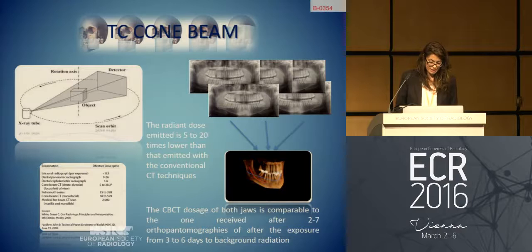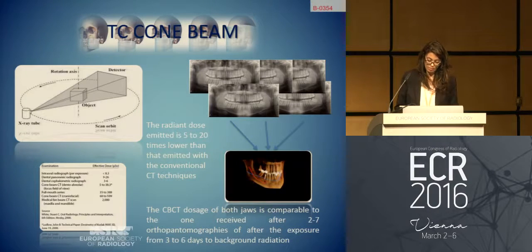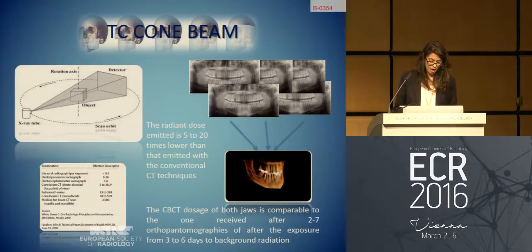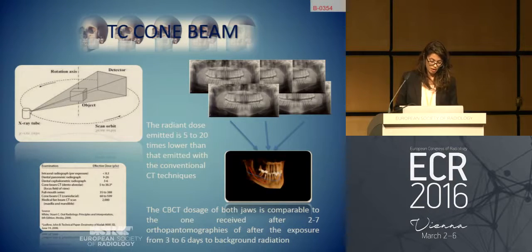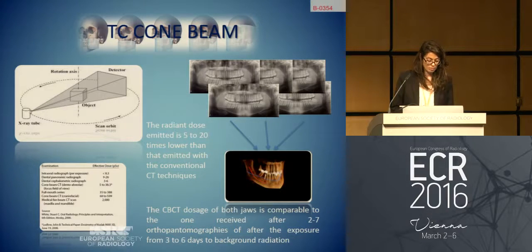Compared to the normal multi-layer CT, the cone-beam technique allows the pulse emission of radiant beams in just one rotation of the detector tube, using an X-ray beam with conical morphology and a single detector — flat panel or brilliance intensifier. The machine is also characterized by low weight, standard power, and lower cost. The radiant dose emitted is 5 to 20 times lower than with conventional CT, also due to the shorter duration of exposure. The examination of both jaws with cone-beam CT has a very small dosage, comparable to two to seven orthopantomographies or three to six days of background radiation exposure.